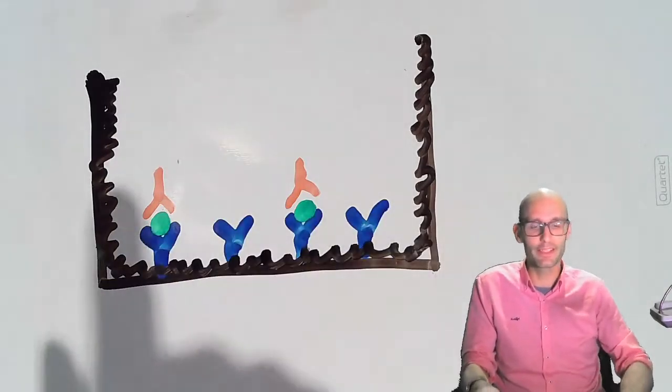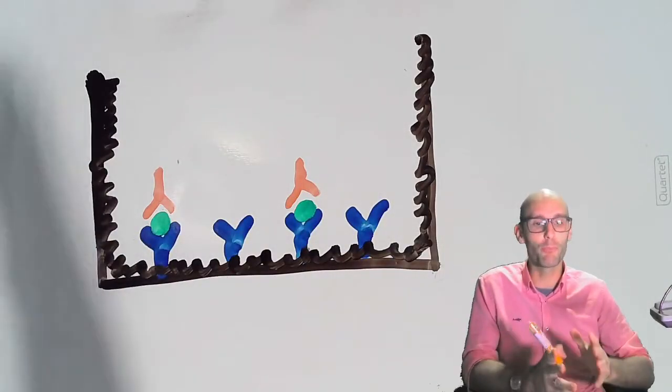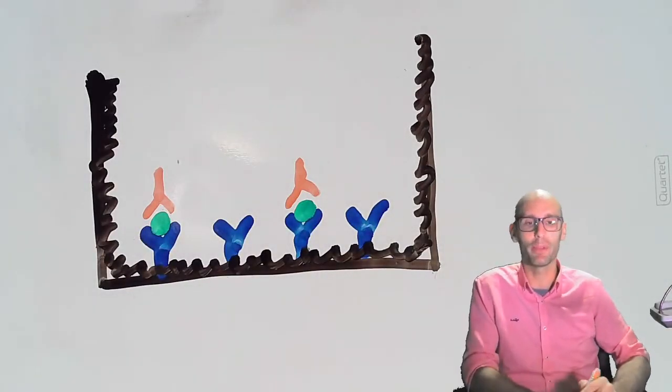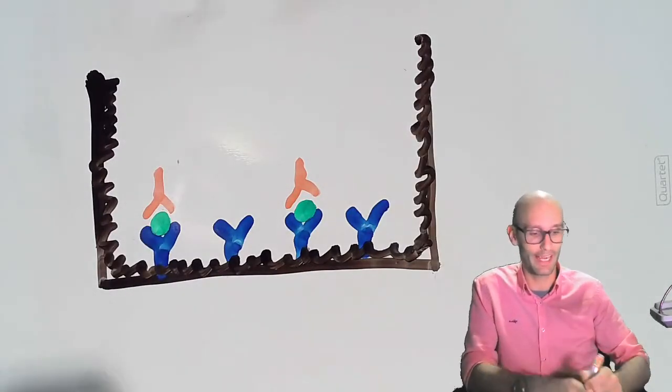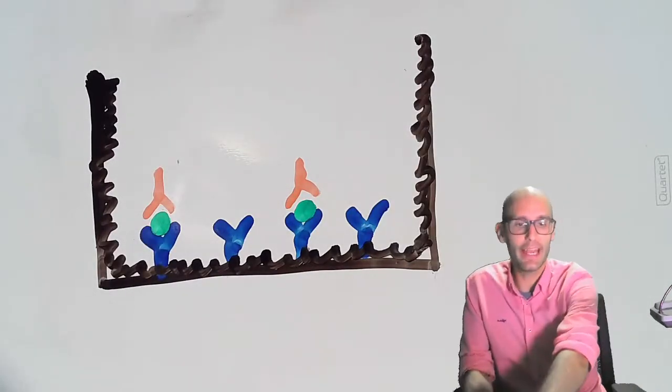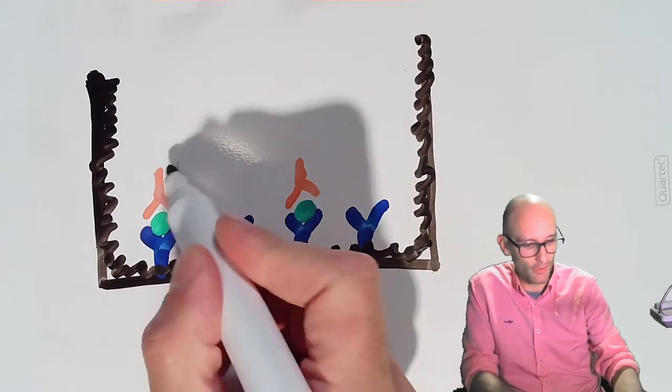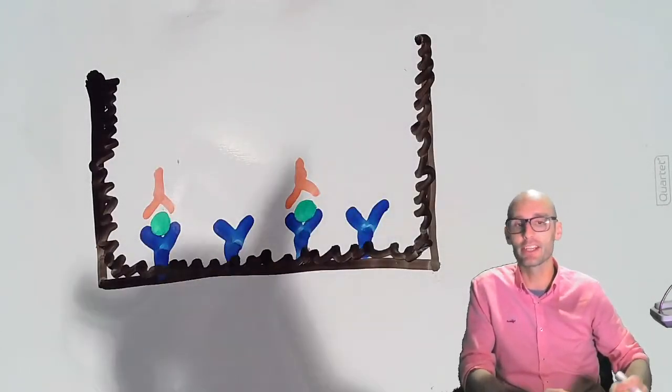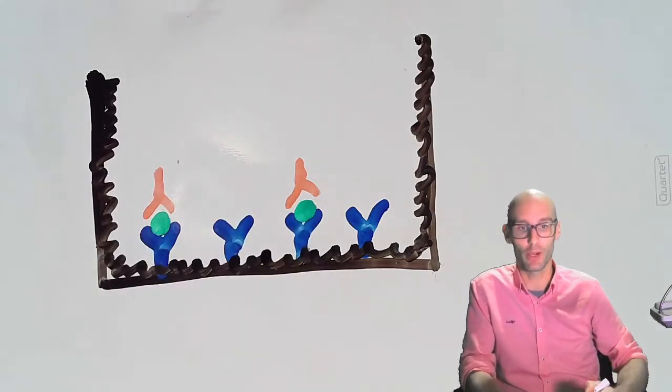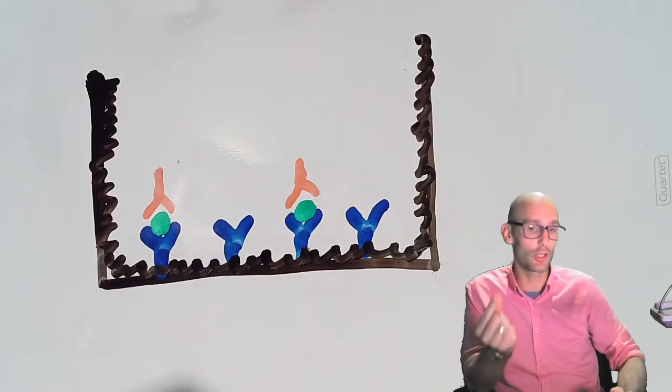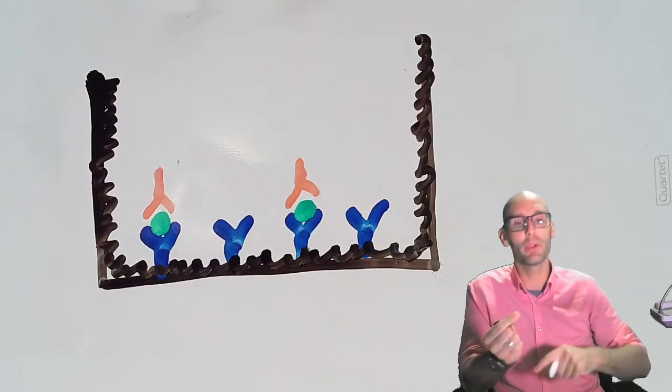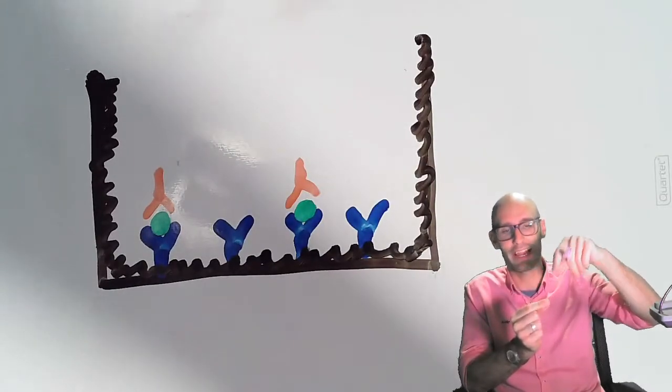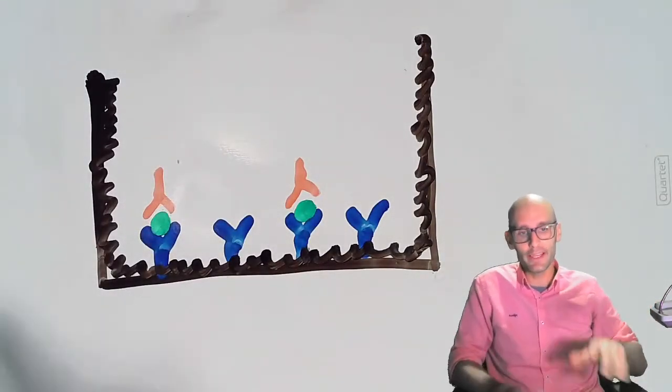So here, this is called the detection antibody, and it will bind to wherever there's an interleukin 1 beta found caught by that capture antibody. Now, attached to the tail of this antibody, this antibody will be raised in another species. So it might be a goat antibody for human IL-1 beta. So we've got a rabbit antibody that caught the interleukin 1 beta, then we have a goat antibody that's acting as the detection antibody.